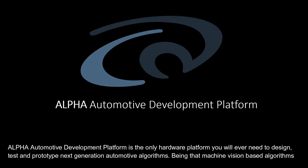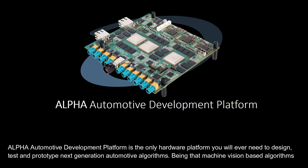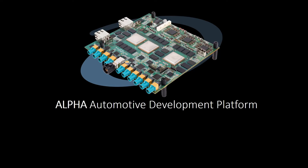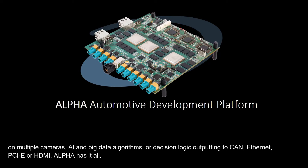Alpha Automotive Development Platform is the only hardware platform you will ever need to design, test and prototype next generation automotive algorithms — whether machine vision based algorithms on multiple cameras, AI and big data algorithms, or decision logic outputting to CAN, Ethernet, PCIe or HDMI. Alpha has it all.